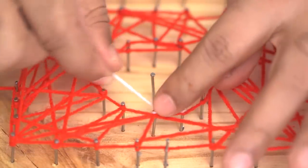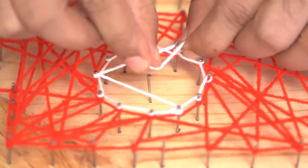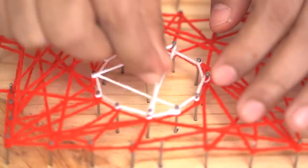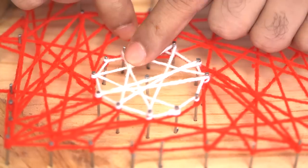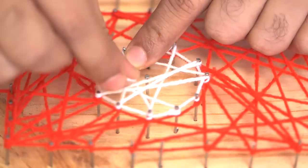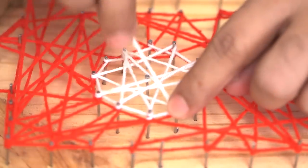If you're finding it difficult to put the wool on a particular nail, then all you need to do is just push the thread down and make some more space. And then you can just wrap it around or twist it around and move on.